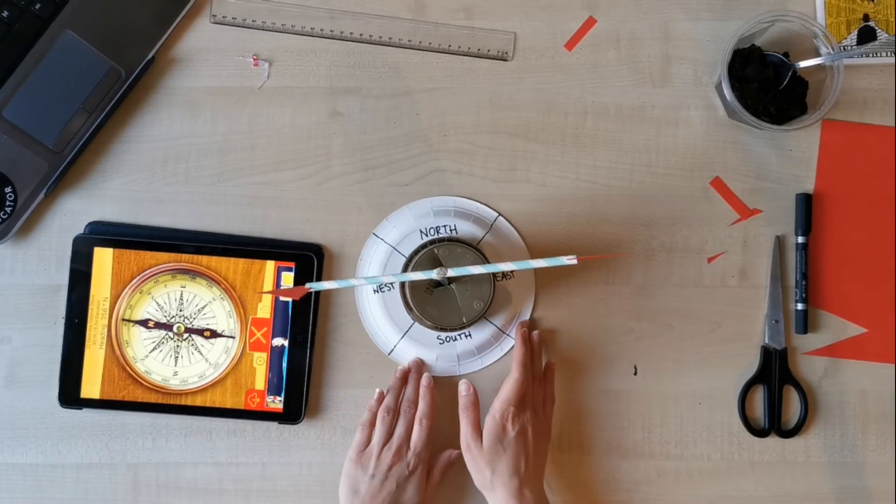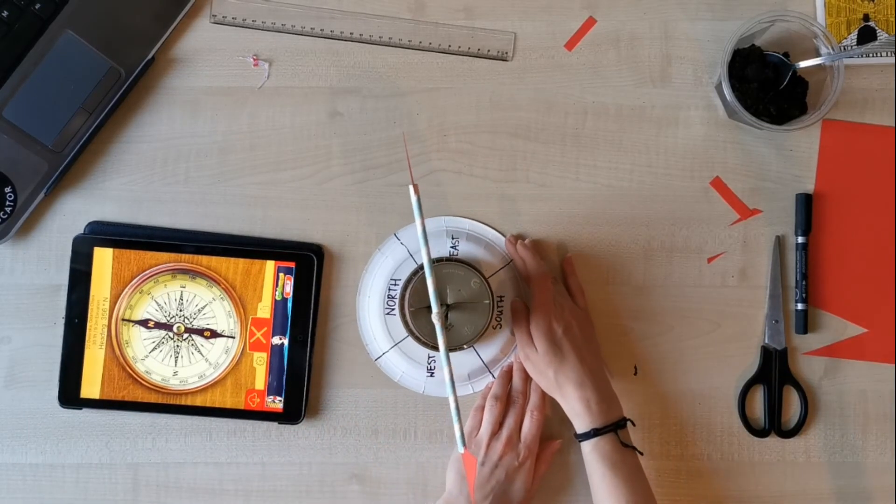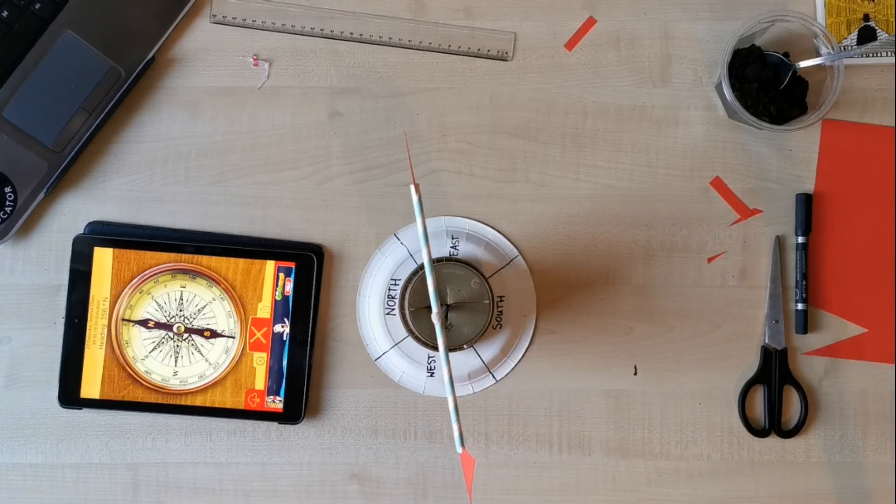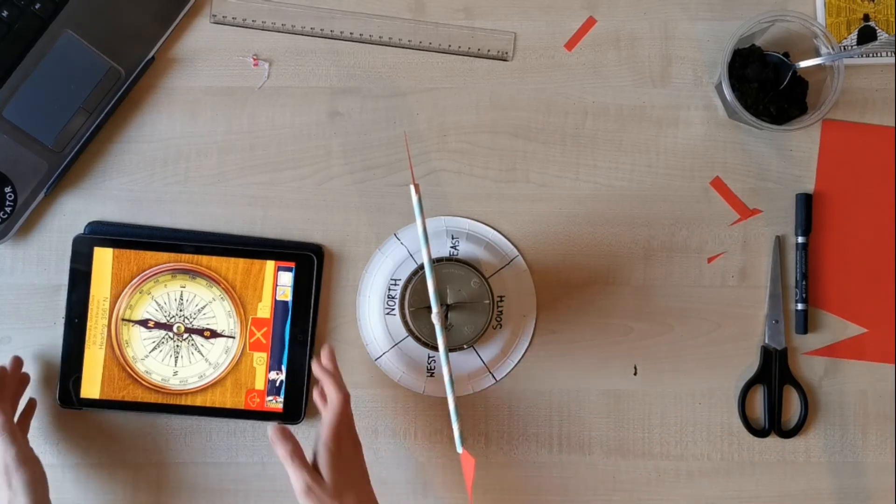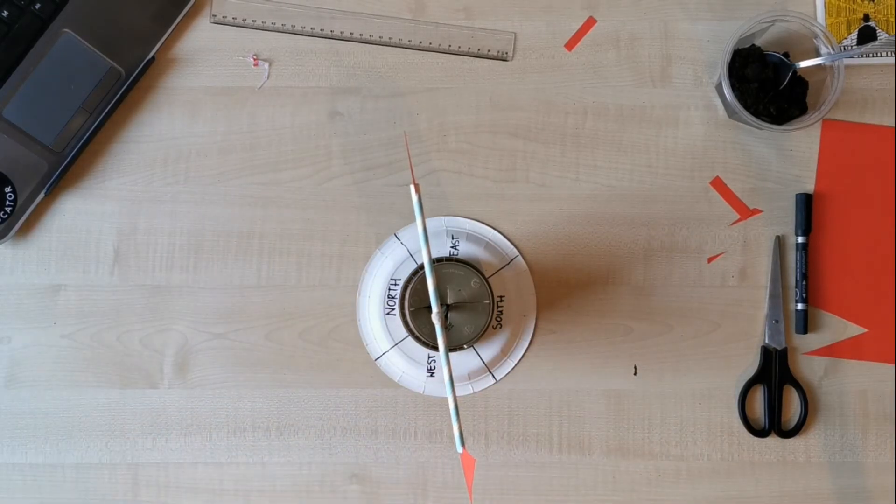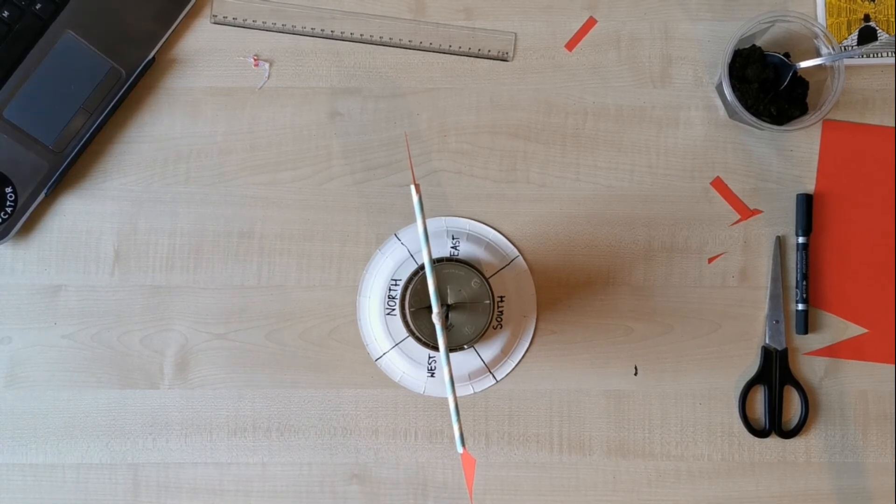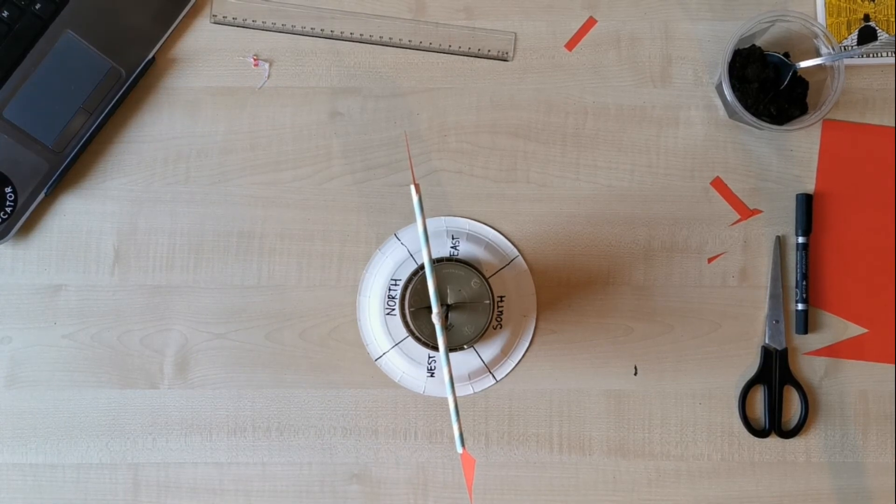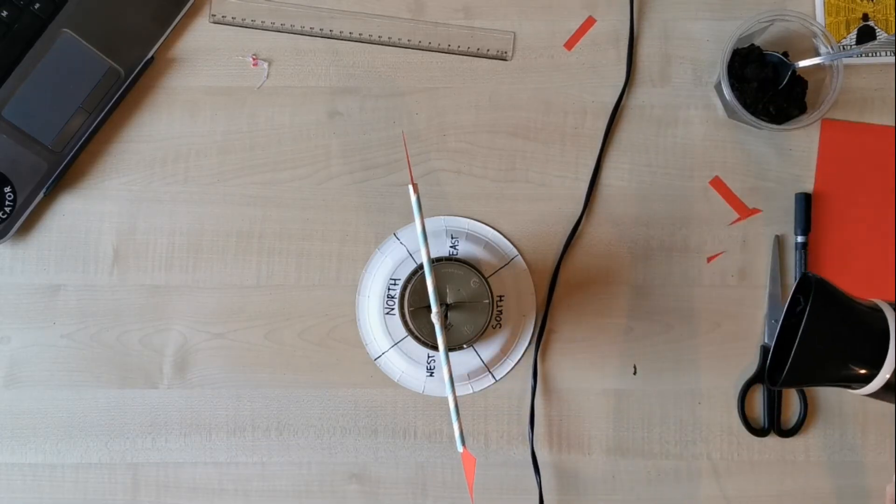Okay. We have north there. So it means that we are going to put our wind vane like that. And now let's check what is going to happen if I blow it with my hair dryer. So if the wind is coming from south.